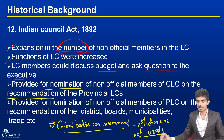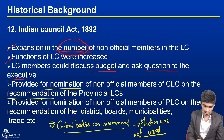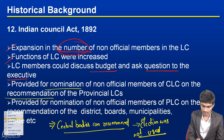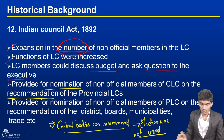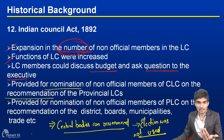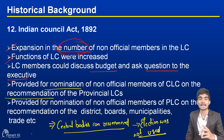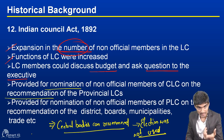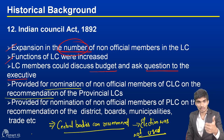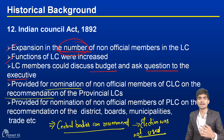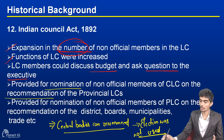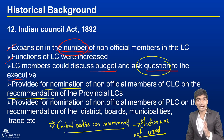The members were allowed to discuss the budget and to question the executive. This meant the whims and fancies of the executive council were getting restrained. The executive became answerable to the people and was questioned by the members of the legislative council, so it could no longer act according to its own wishes.